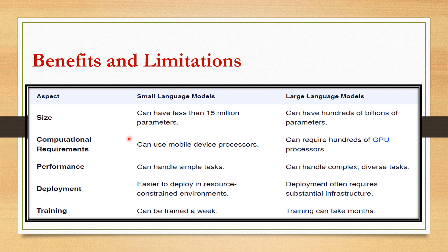In terms of size, SLMs range around 15 million parameters while LLMs require hundreds of billions. For computational requirements, SLMs can run on mobile devices while large LLMs require hundreds of GPUs. SLMs handle simpler tasks while LLMs handle complex and diverse tasks. Deployment-wise, SLMs are easy to deploy and can be trained in a week, while LLMs can take a month to deploy and require substantial infrastructure.